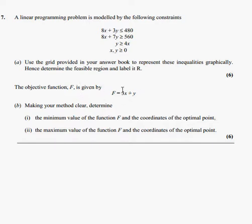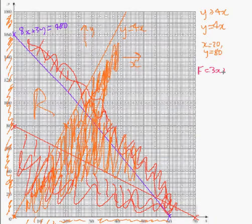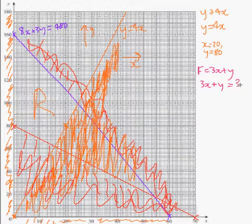Next part, we're given the objective function. Now this is the thing that tells us about things like profit or loss or the thing that we're trying to maximize or minimize. And it says making your method clear to determine the minimum value of the function and the maximum value of the function. So let's just have a look. We've got this thing here. And our objective function was f equals 3x plus y. So we need to somehow plot this on our graph. So let's think about how we might do that. And if you remember, we can't just plot this straight away because we don't have a value for f. So we're going to make one up.